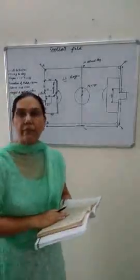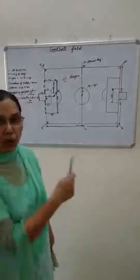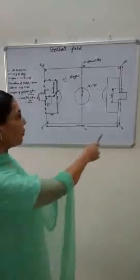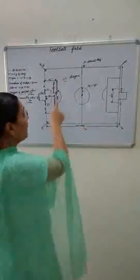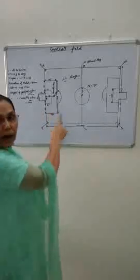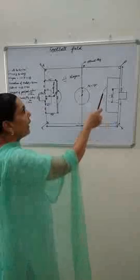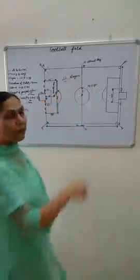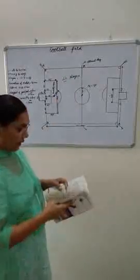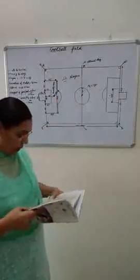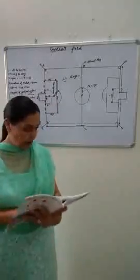Hello students. First I taught you regarding the football field — how to draw it, the length and breadth, the goal area, penalty area, penalty hour, center circle, midway line, the four corner flags, and optional flags. Today I will tell you about the number of players in a match.